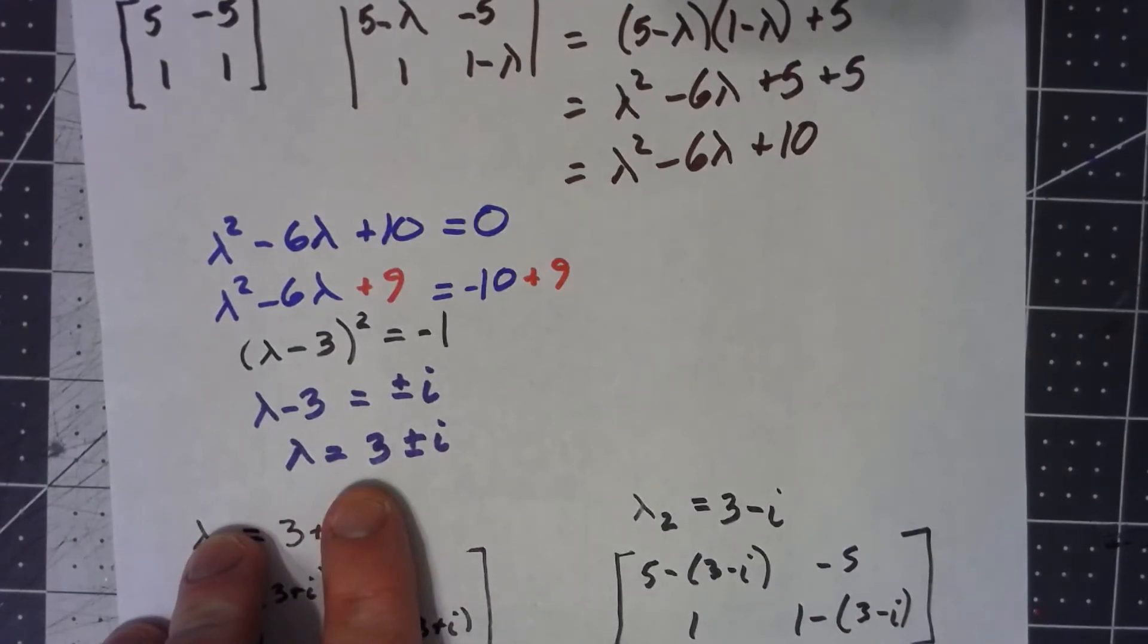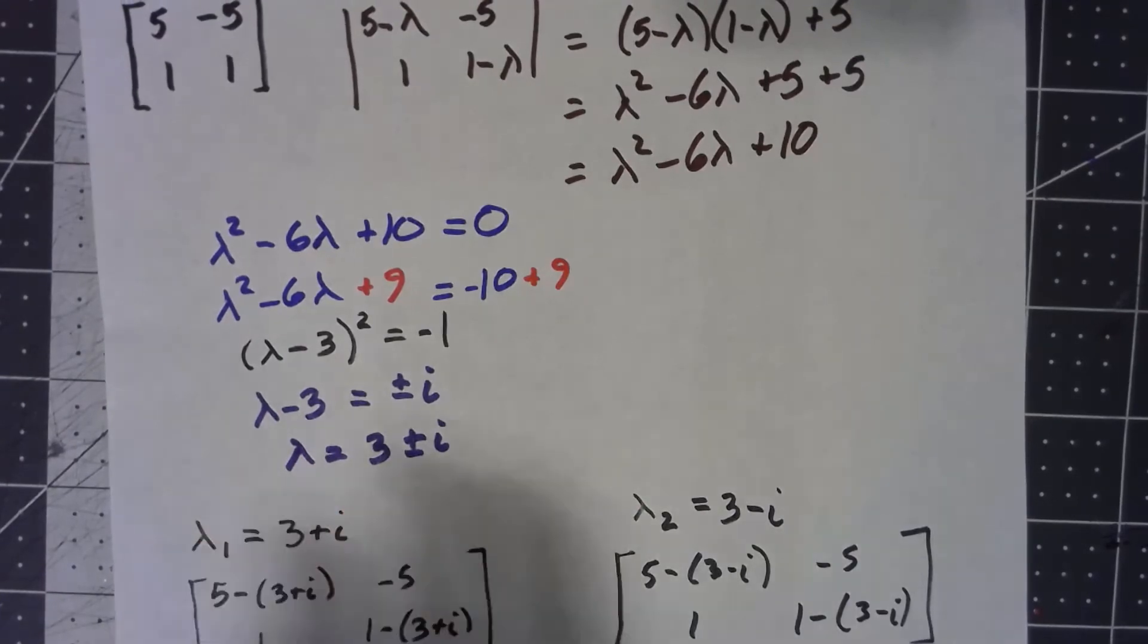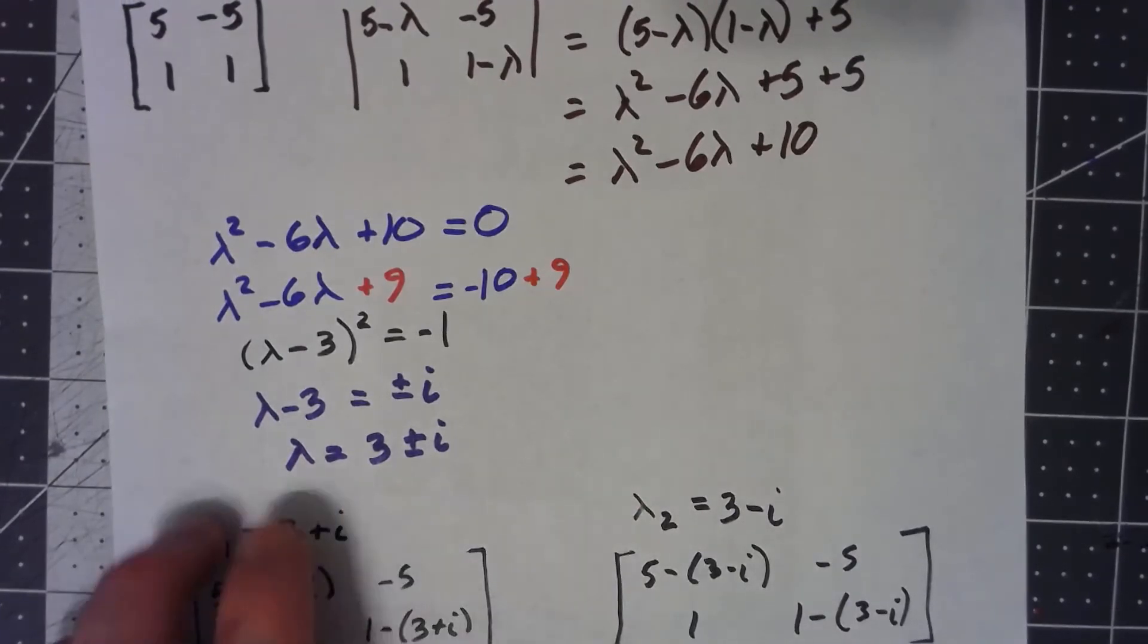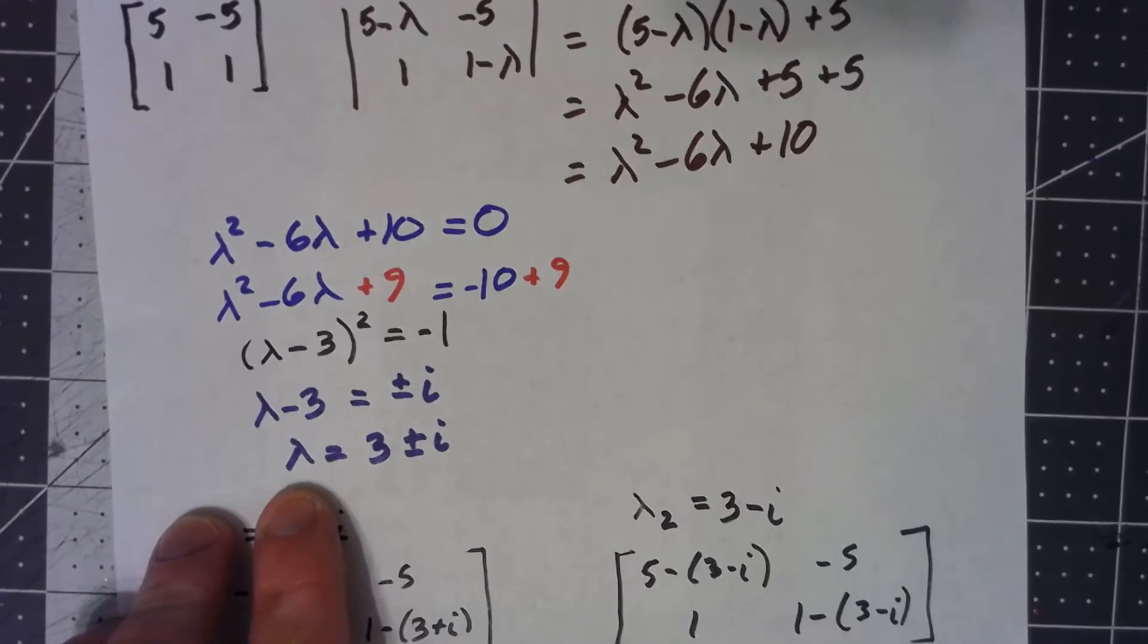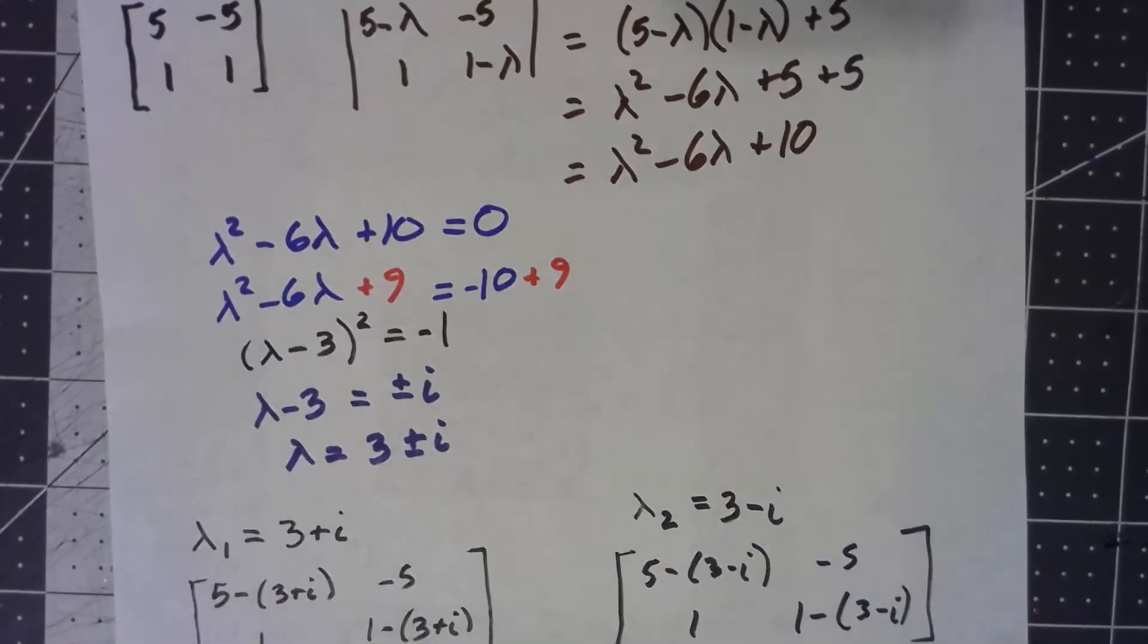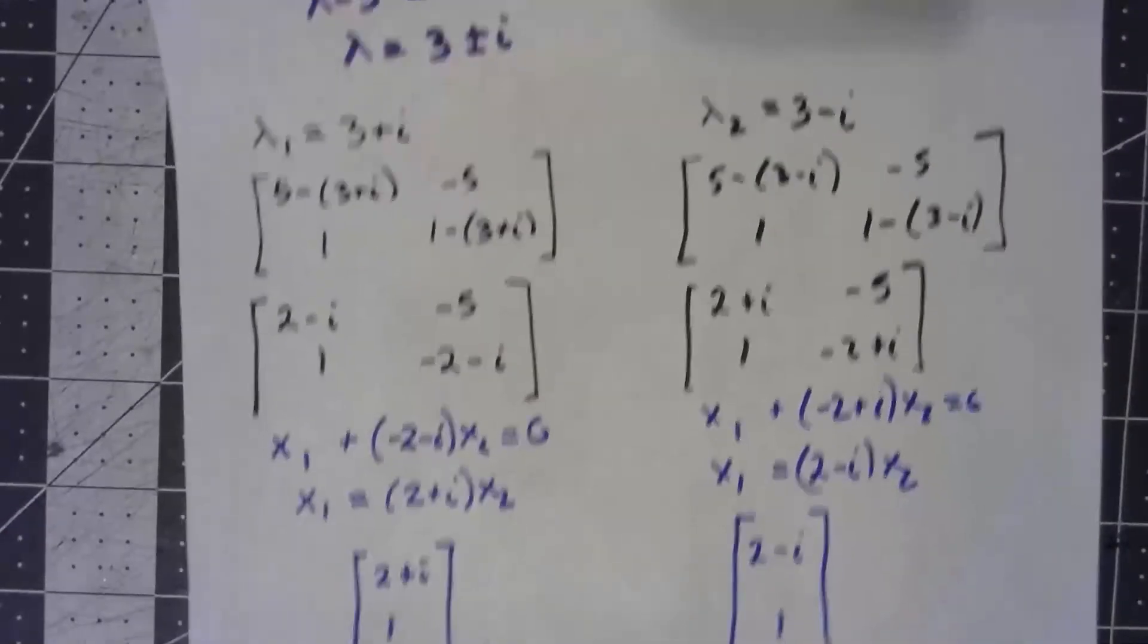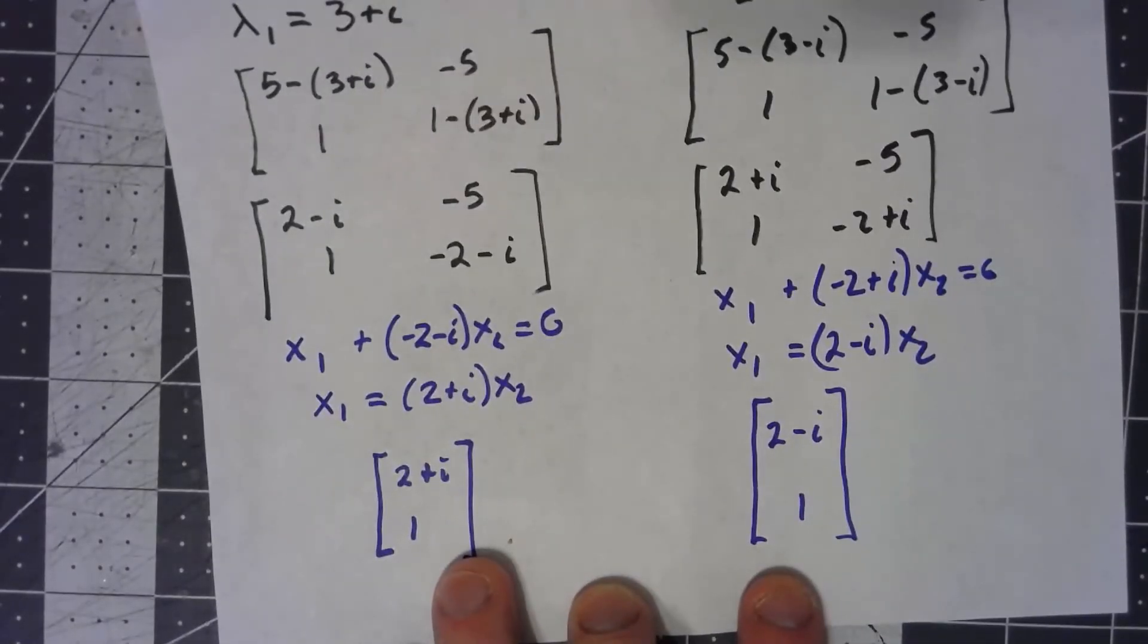Our eigenvalues were complex conjugates of each other. Anytime you've got a complex eigenvalue, the complex conjugate is also going to be an eigenvalue. Further, the eigenvectors we end up were also basically complex conjugates of each other.